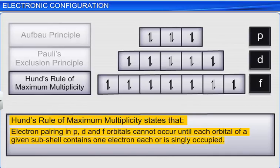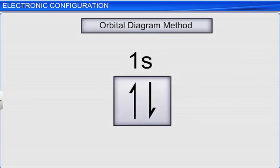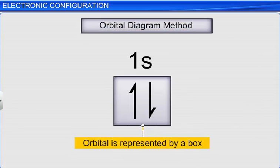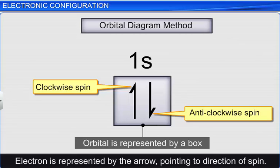We can represent the electronic configuration in two ways. One way is to represent it by the orbital diagram method. In this method, the orbital is represented by a box and an electron is represented by an arrow in it. If the spin of the electron is in a clockwise direction, then the head of the arrow points upwards. A clockwise spin is called the positive spin and anti-clockwise spin is called the negative spin.